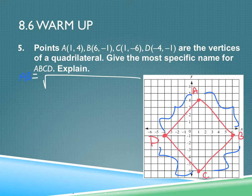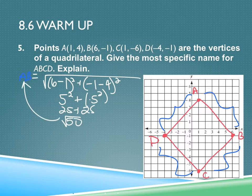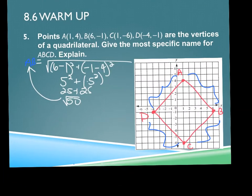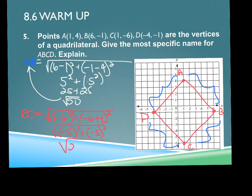Using the distance formula: √((x₂ - x₁)² + (y₂ - y₁)²). For AB, I get √(5² + (-5)²) = √(25 + 25) = √50. So that's AB. I don't need to simplify since I'm using these to compare. Then for BC: √((1-6)² + (-6-(-1))²) = √((-5)² + (-5)²) = √(25 + 25) = √50. So AB is congruent to BC.